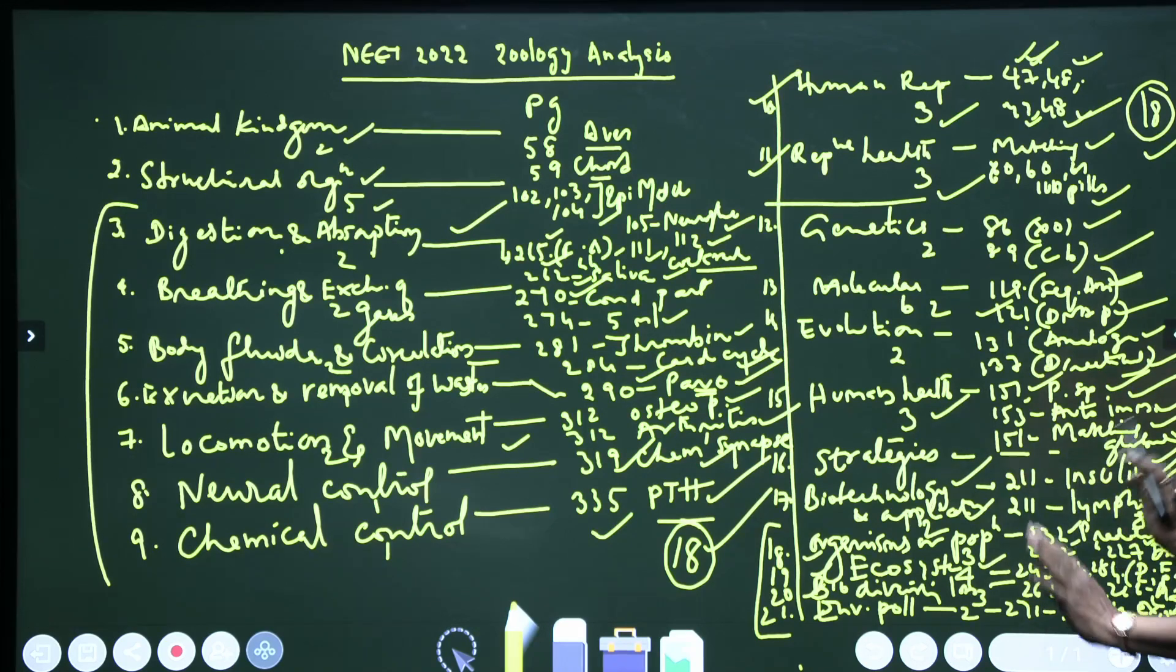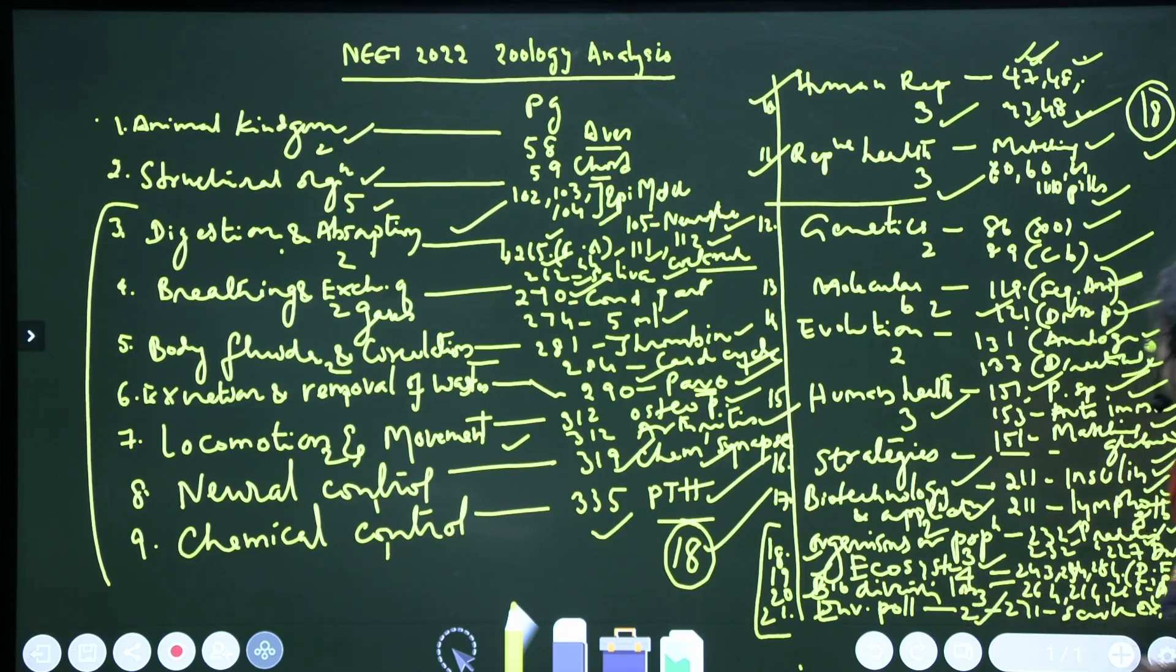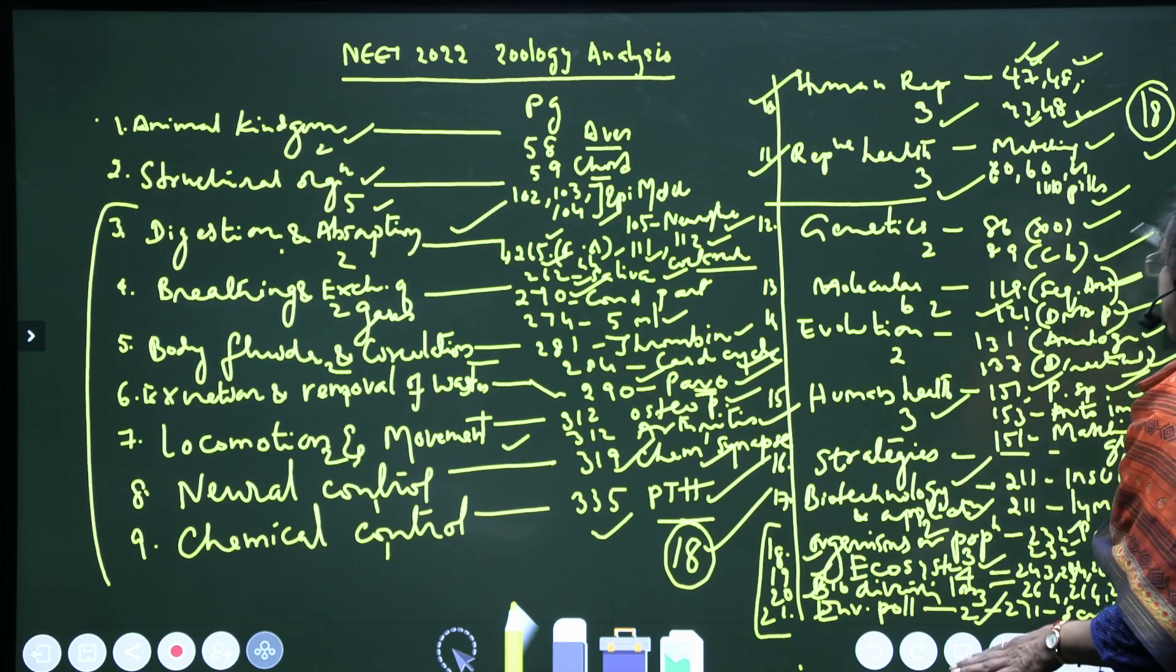Coming to Environmental Pollution also, two questions are given from page 271, where the electrostatic precipitator and scrubbers are given for the particulate matter, etc. So here, Ecology part, you find 12 questions.